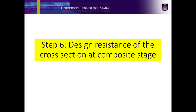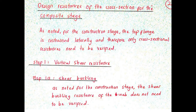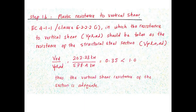Now let's continue to Step 6: design resistance of the cross section at composite stage. As noted for the construction stage, the top flange is restrained laterally, and therefore only cross-sectional resistances need to be verified. The shear buckling resistance of the web does not need to be verified. The next step is to verify the plastic resistance of the composite beam to vertical shear. From EC4 Part 1-1, Clause 6.2.2.2.1, the resistance to vertical shear VPLRD should be taken as the resistance of the structural steel section, and in this case the vertical shear resistance is adequate.